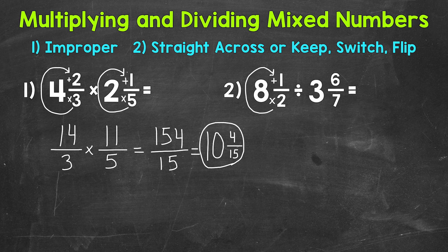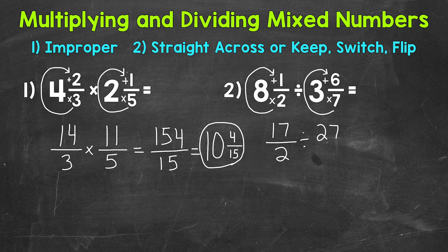So 2 times 8, that's 16, plus 1 is 17. Keep our denominator of 2 the same. Bring our division sign down here. And then 3 and 6 sevenths. So multiply and then add. 7 times 3 is 21, plus 6 is 27. So that's our numerator. Keep our denominator of 7 the same.